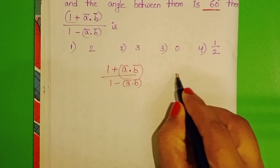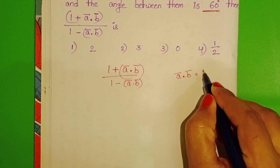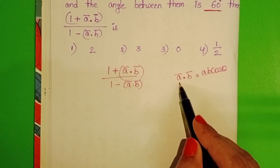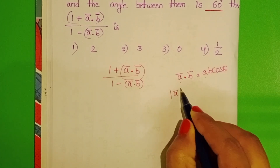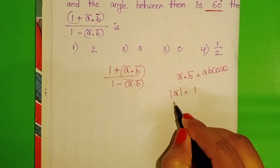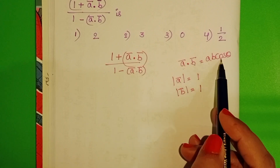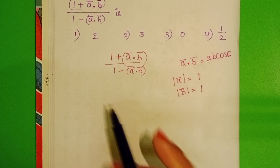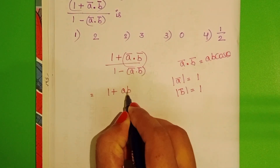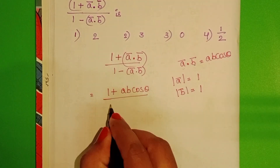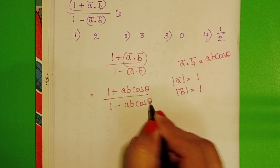We know the dot product of two vectors ā·b̄ equals |a||b|cosθ. Here a and b are unit vectors, so the magnitude of vector a is 1 and magnitude of vector b is 1. The expression becomes (1 + |a||b|cosθ) / (1 - |a||b|cosθ).